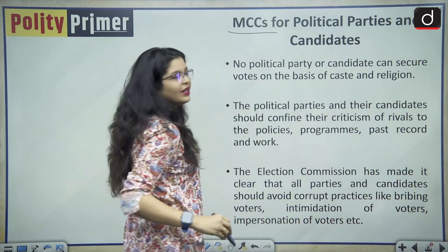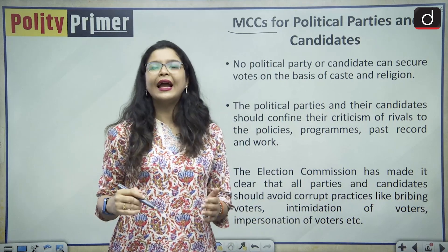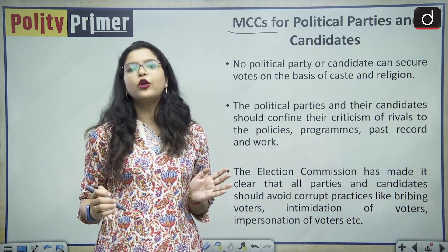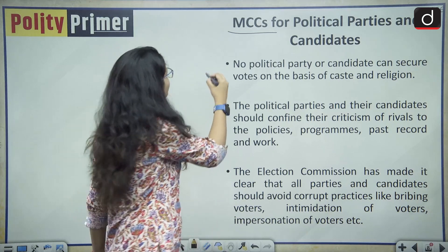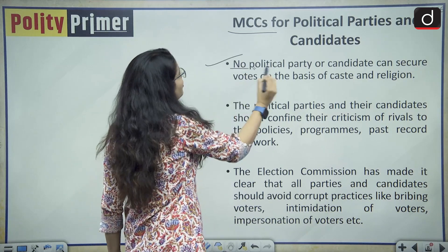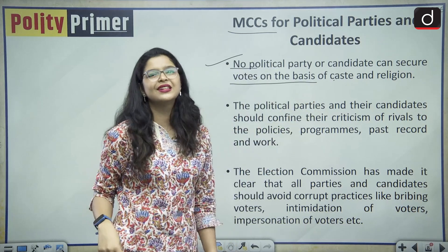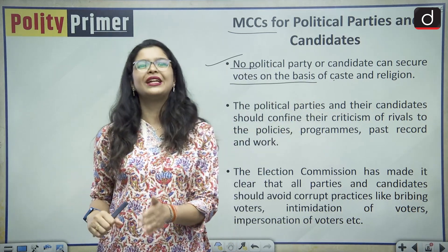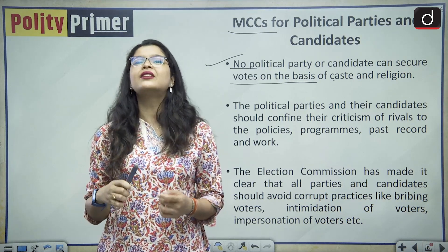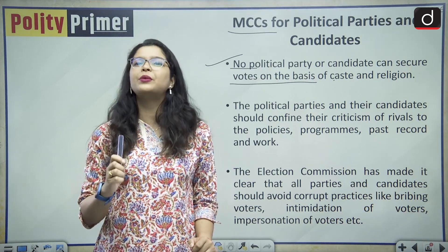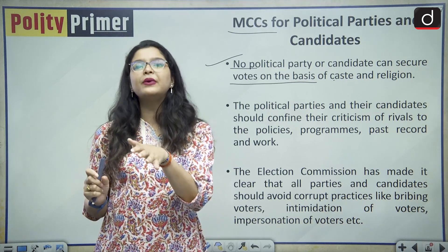Looking at important MCC provisions for political parties and candidates: first, no political party or candidate can secure votes on the basis of caste and religion. Sadly, this is also a dead letter — every political party in India tries to secure votes on the basis of caste and religion. Parties cannot even use temples or other religious institutions for election campaigns.